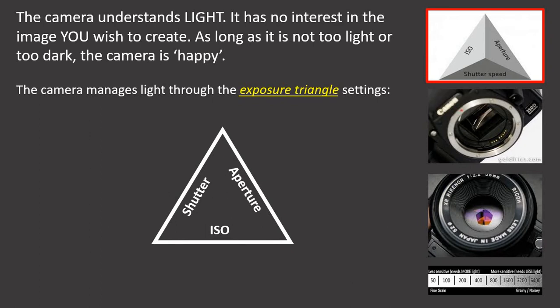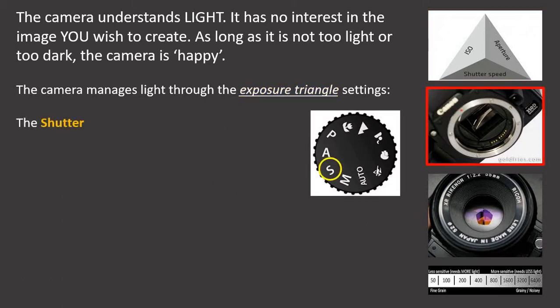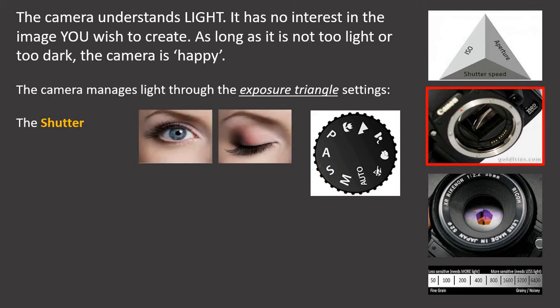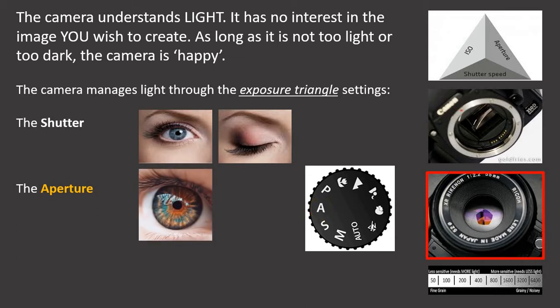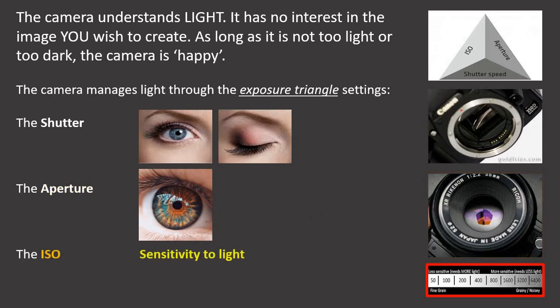The camera manages light through exposure triangle settings, of which there are three: shutter, aperture and ISO. The shutter on the dial, seen as an S, is a bit like the blinking of an eye — the longer or shorter the eye is open, the more or less light can get in to hit the retina, or in camera terms the sensor. The aperture is a bit like the iris dilating into the pupil — the more or less dilated it is, the more or less light can get in to the retina or sensor at the back of the camera. The ISO settings are about sensitivity to light for the sensor itself, making it more or less sensitive, and this is accessed normally via a menu.